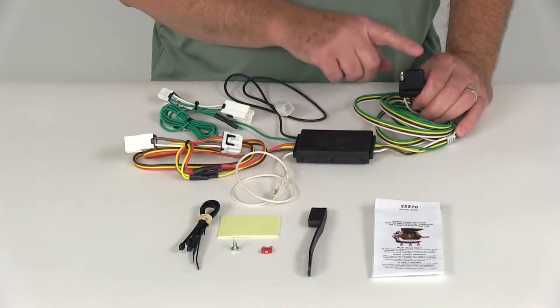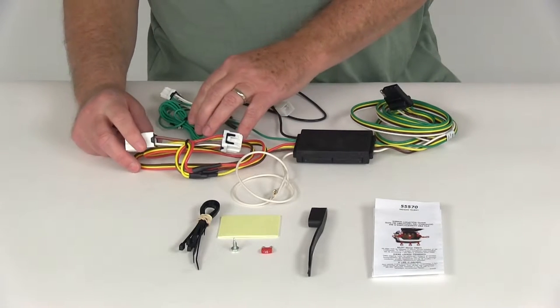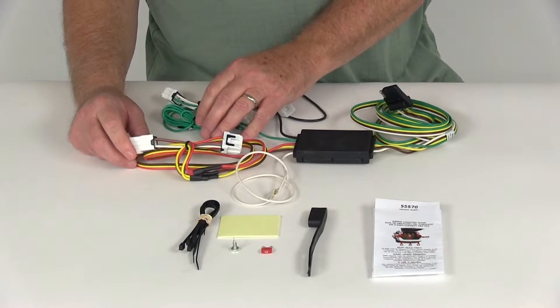So this harness will provide this 4-Way Flat Trailer Connector at the back of your vehicle to power your trailer signal lights. It does connect very quickly and easily, there's no cutting or splicing of wires.